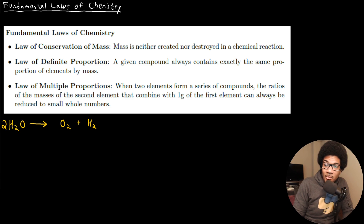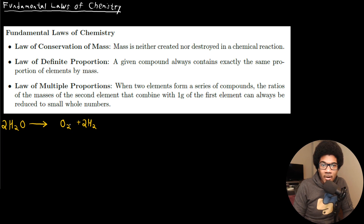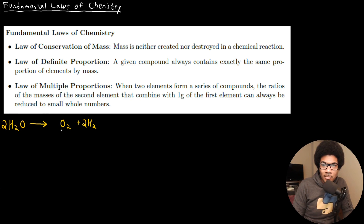That's why we add stoichiometric coefficients in front. You would say we have two water molecules — on this side we'll have four hydrogens and two oxygens. Now the oxygen is balanced, and to balance the hydrogens, you say you're going to form two molecules of H2. This is now consistent with the law of conservation of mass. We'll go into much more detail later, but this is why balancing is required — all mass has to be accounted for.